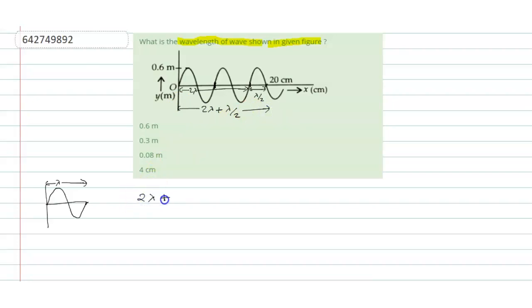2 lambda plus lambda by 2 equals 20 cm. So it becomes 5 lambda by 2 equals 20 times 10 raised to the power minus 2 meter.